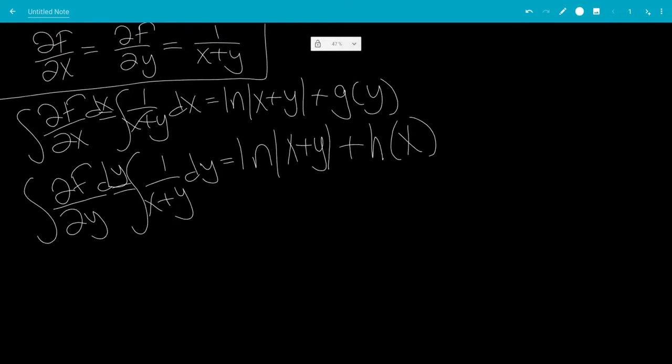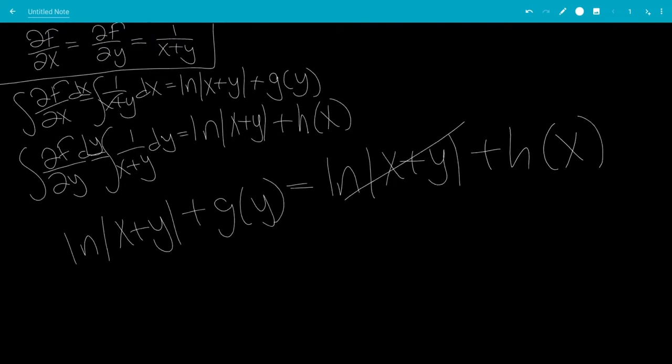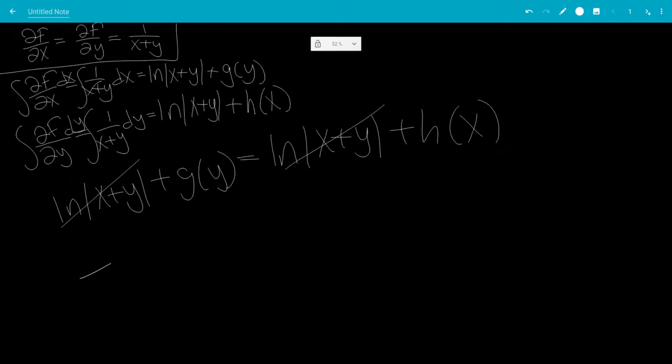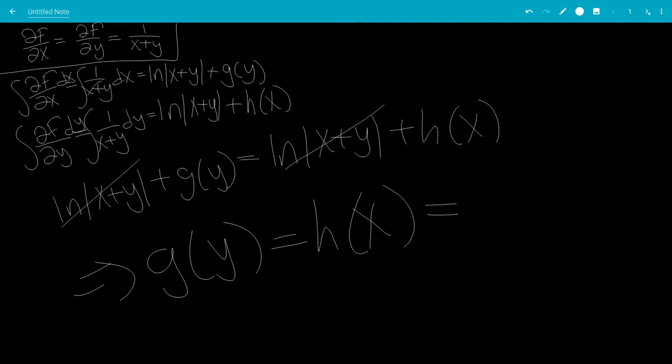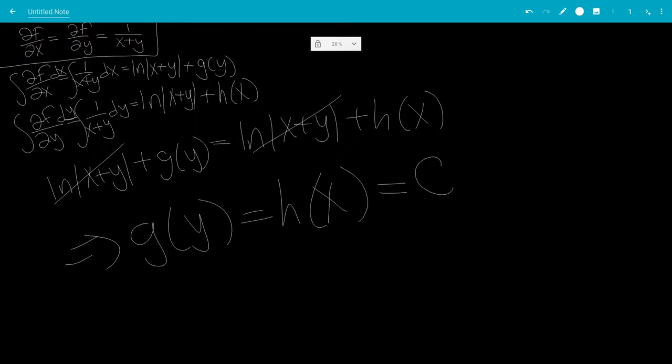So now we set ln of x plus y plus g of y equal to ln absolute value of x plus y plus h of x. This and this will cancel, leaving us with g of y being h of x. This is only possible when the functions are constants, because an x function cannot equal a y function.